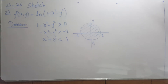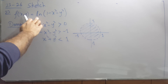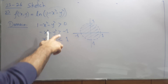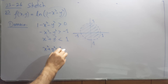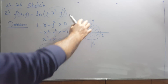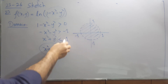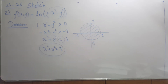From questions 23 to 26, they ask you to sketch the graph of the domain. For the function involving natural log, the domain requires that the argument inside the natural log is always positive. So the expression must be greater than zero; taking terms to the other side and multiplying by negative reverses the inequality, giving x² + y² less than 1, which is the equation of a circle. Since it is strictly less than 1, all points are strictly inside the circle, so you draw a dotted line.